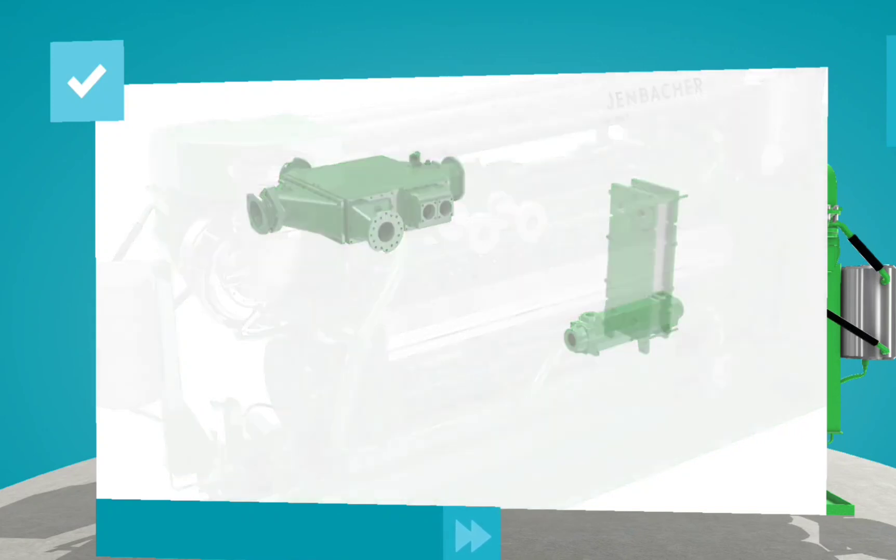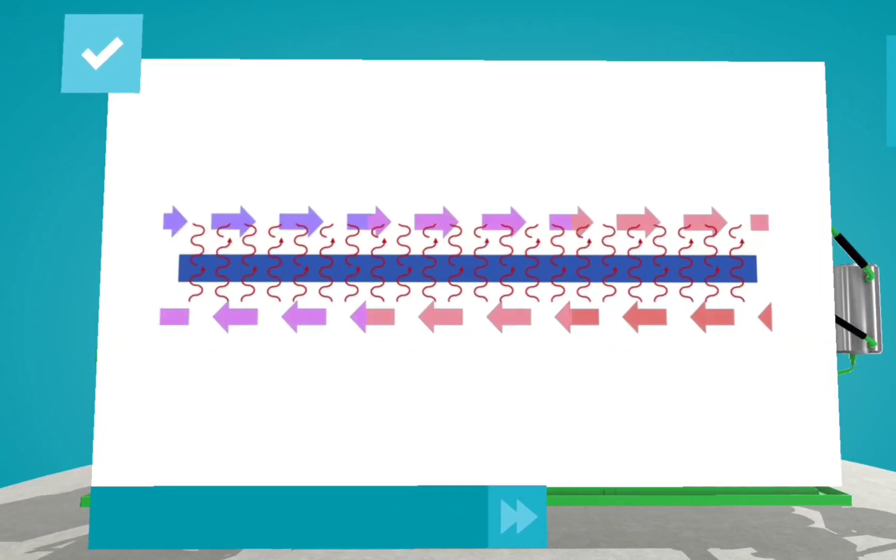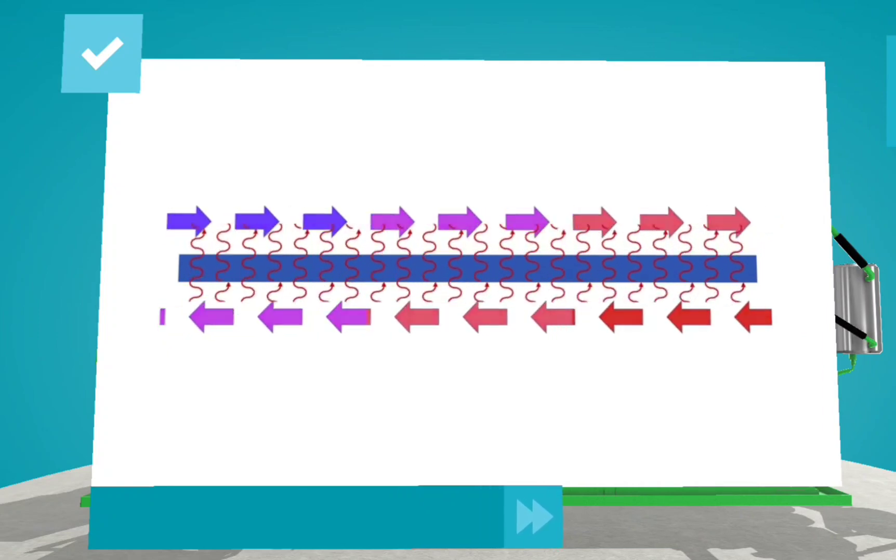A heat exchanger works when hot and cold media pass next to each other, separated by a metal wall.